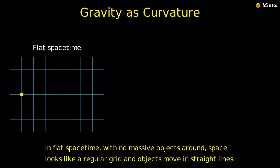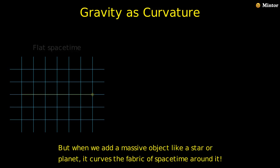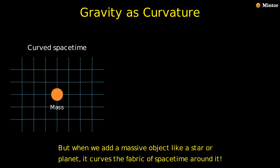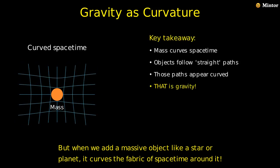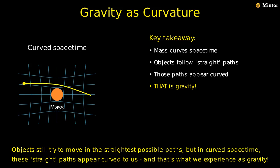In flat spacetime, with no massive objects around, space looks like a regular grid and objects move in straight lines. But when we add a massive object like a star or planet, it curves the fabric of spacetime around it. Objects still try to move in the straightest possible paths, but in curved spacetime, these straight paths appear curved to us, and that's what we experience as gravity.